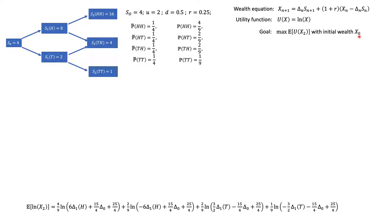In the previous video, we showed that the expected utility of the investor from the portfolio equals this long expression here. What we need to do is find the unknowns — delta_1(H), delta_1(T), delta_0 — which describe how much the investor needs to trade in the stock and consequently how much to hold in the money market. Given this expression, we could use software like Excel Solver to maximize it.